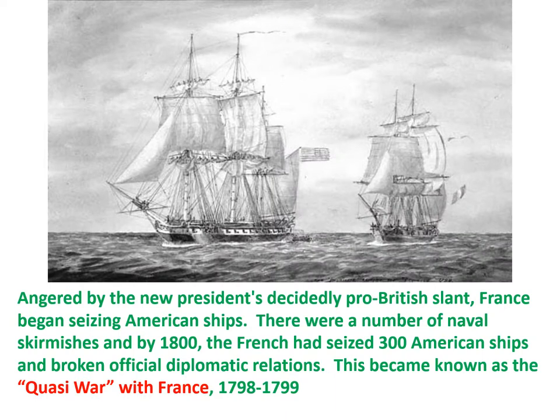The war between Britain and France, of course, continued. France, angered by the new president's decidedly pro-British slant, began seizing American ships, like the English had done earlier. There were a number of naval skirmishes that took place, and by 1800, the French had seized 300 American ships and broken official diplomatic relations, recalling their ambassador to the United States.